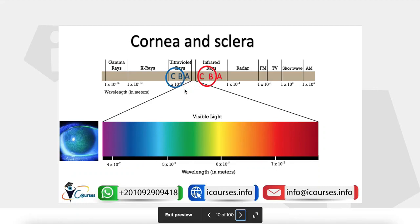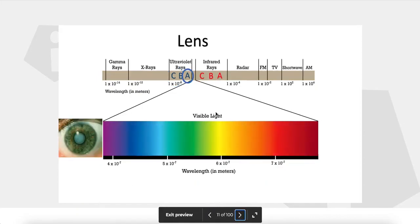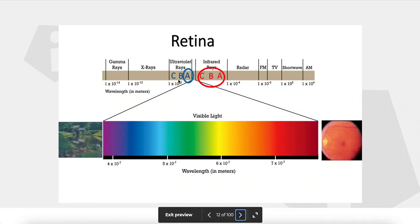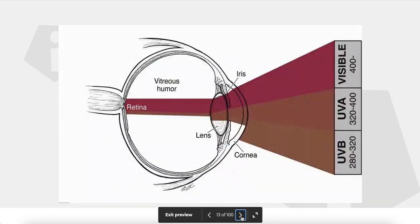Ultraviolet C and B, and infrared B and C, are absorbed by the cornea and sclera. Ultraviolet rays absorbed by the cornea can cause the clinical picture of photoophthalmia or photokeratitis. The lens can absorb ultraviolet rays, which is sometimes attributed as a responsible mechanism for cataract formation. Ultraviolet A can reach the retina in small amounts, and all infrared rays can pass through the ocular media to reach the retina, causing solar maculopathy or solar retinopathy.